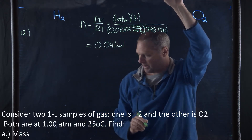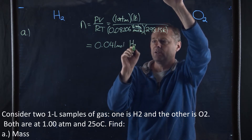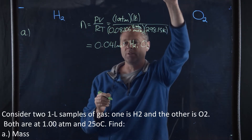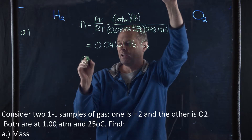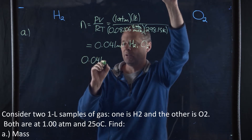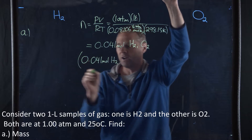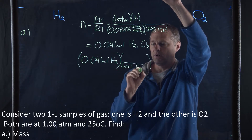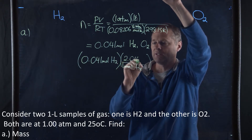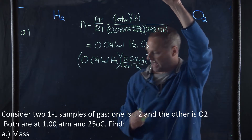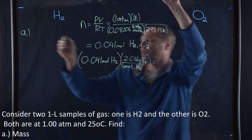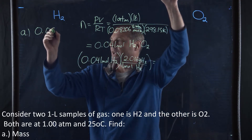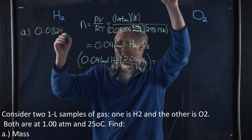This 0.041 moles applies to either hydrogen or oxygen. If we want to determine the mass for hydrogen, it's going to be 0.041 moles of hydrogen times the molar mass of hydrogen. One mole of hydrogen is equivalent to 2.016 grams, giving us 0.0824 grams of hydrogen.